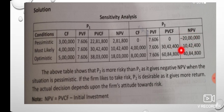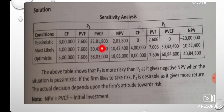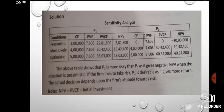In the case of P2, there is a negative cash flow under pessimistic conditions, which indicates higher risk. In summary, there are three methods covered: the standard deviation method, the coefficient of variation method, and the sensitivity analysis method.